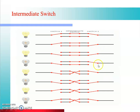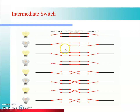Ab hum dekhenge ki intermediate switch jis mein 4 contacts hote hain. Jab yeh intermediate switch ek position mein hai, yaani one aur two connected hain, aur switch one bhi ek position mein hai, to current ko ek path milta hai aur lamp glow hoga. Jab second condition mein path complete nahi ho raha, to lamp glow nahi hooga. Third condition mein current ko ek path mil raha hai to lamp glow hoga, aur fourth mein continuous path nahi hone se lamp glow nahi hooga.